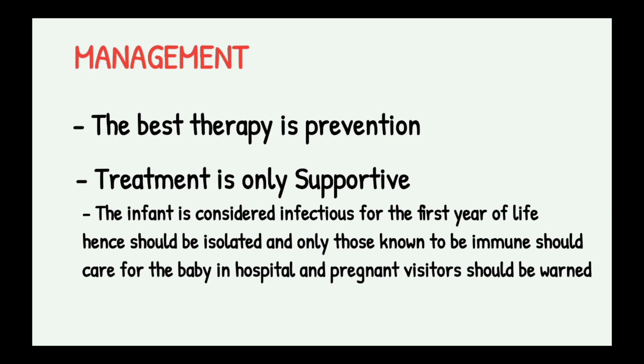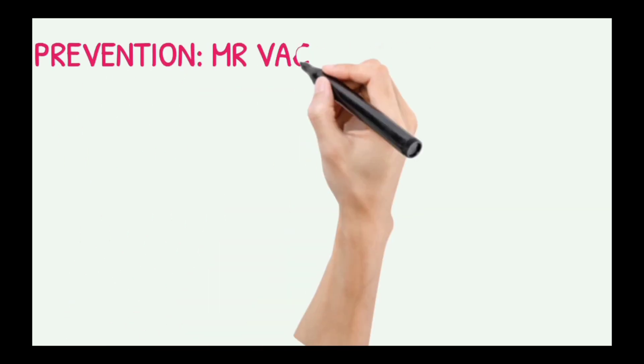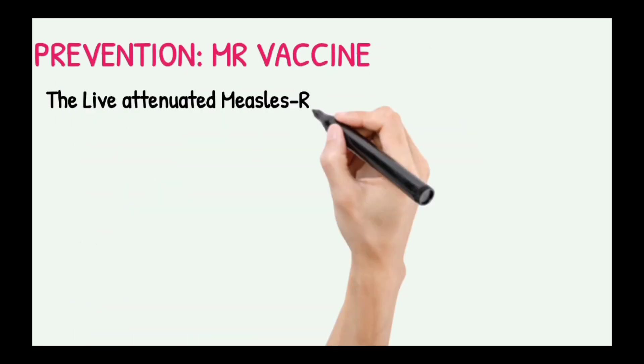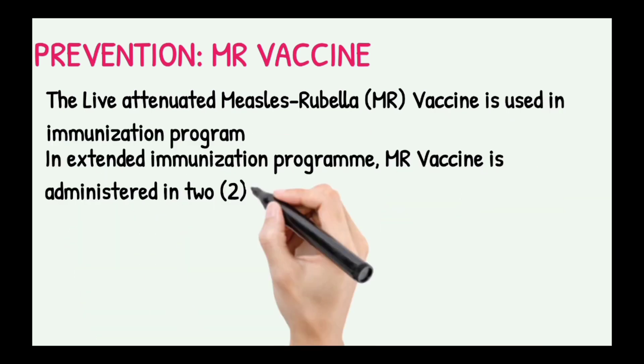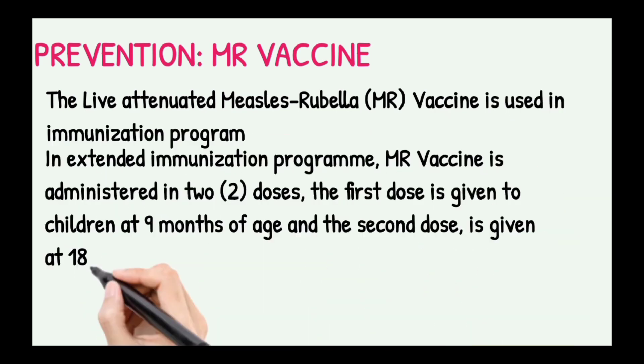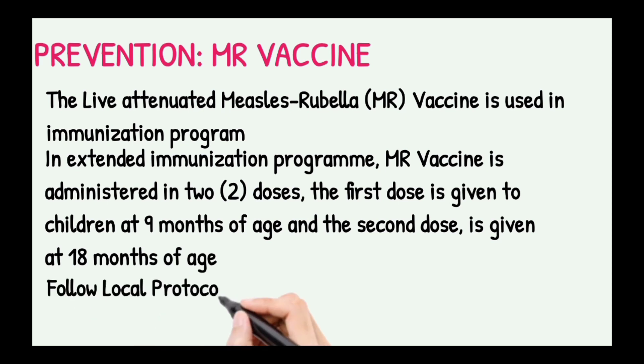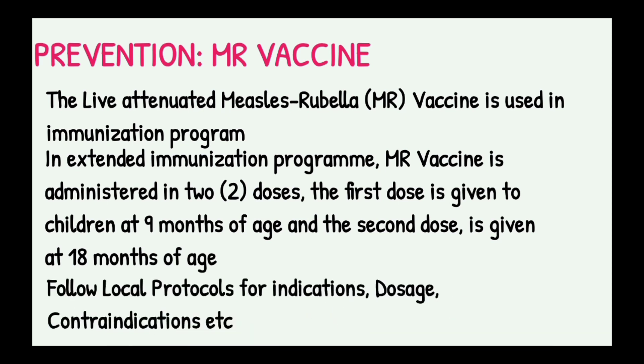For prevention, we use the Measles-Rubella vaccine, which is a live attenuated vaccine used in immunization programs. In the extended immunization program, it is given in two doses: dose one at nine months and dose two at 18 months. Local protocols should be followed for indications, dosage, and contraindications.